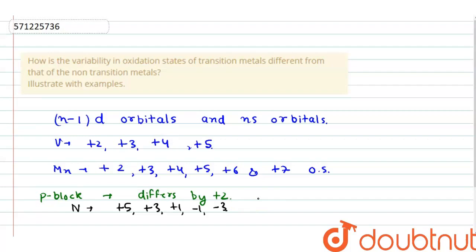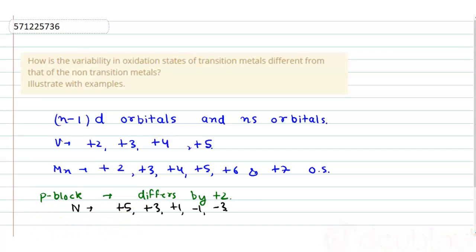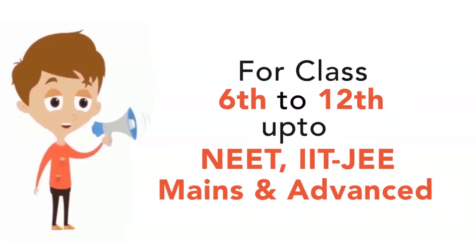So that was all about the differences in variable oxidation states of transition metals and that of non-transition metals. I hope you have understood. Thank you so much for watching.